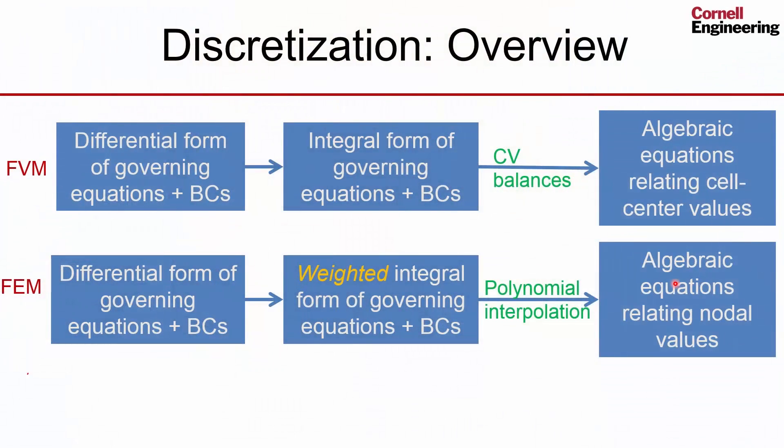So you could get cases, as you saw in the heat conduction example, where heat leaving one element through a face is not equal to the heat entering the adjoining element. In at least simple situations, you can show that you would end up with the same form of algebraic equations in both methods, but as you go to more complicated problems, you will not get the same form for the algebraic equations, depending on the details.